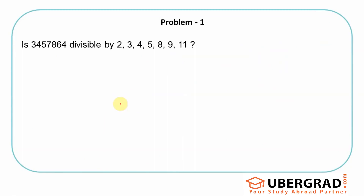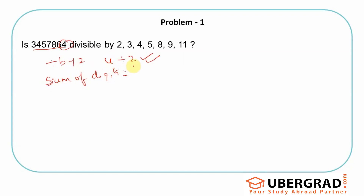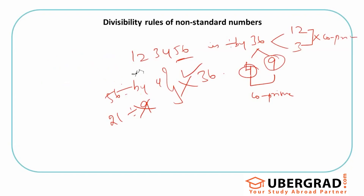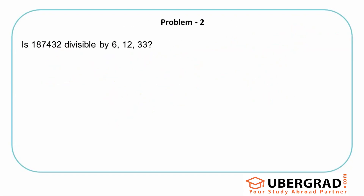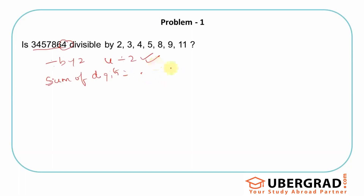Let's do a practice problem. Given a number, check if it's divisible by 2, 3, 4, 5, 8, 9, and 11. For 2: the last digit is 4, which is divisible by 2, so yes. For 3: sum of digits is 3+4+5+7+8+6+4 = 37. Is 37 divisible by 3? No, remainder is 1, so not divisible by 3. For 4: last 2 digits are 64. Is 64 divisible by 4? Yes, 4×16=64, so the whole number is divisible by 4.